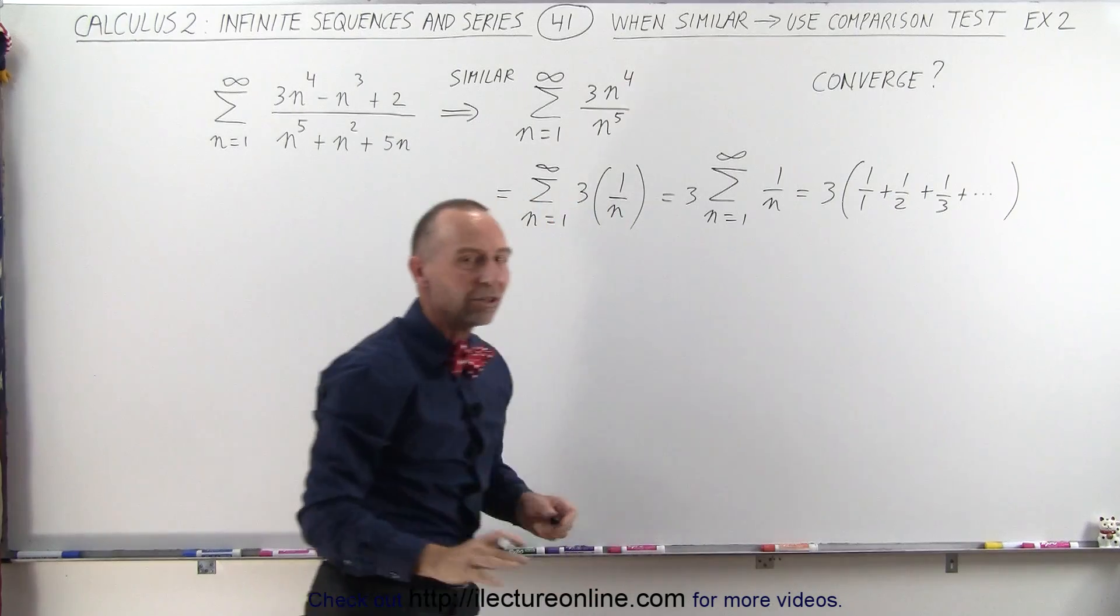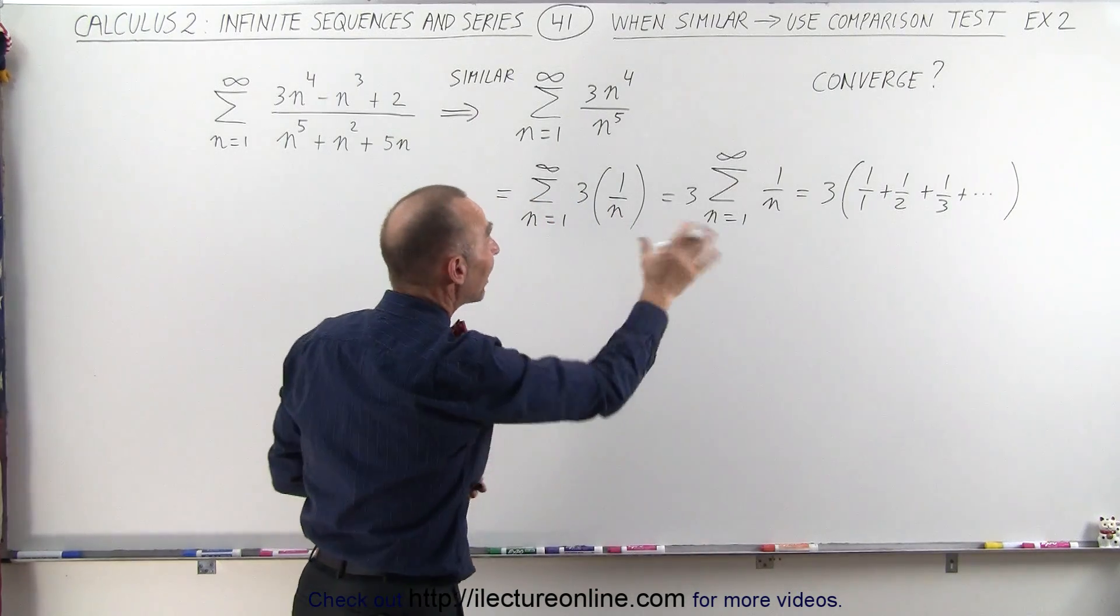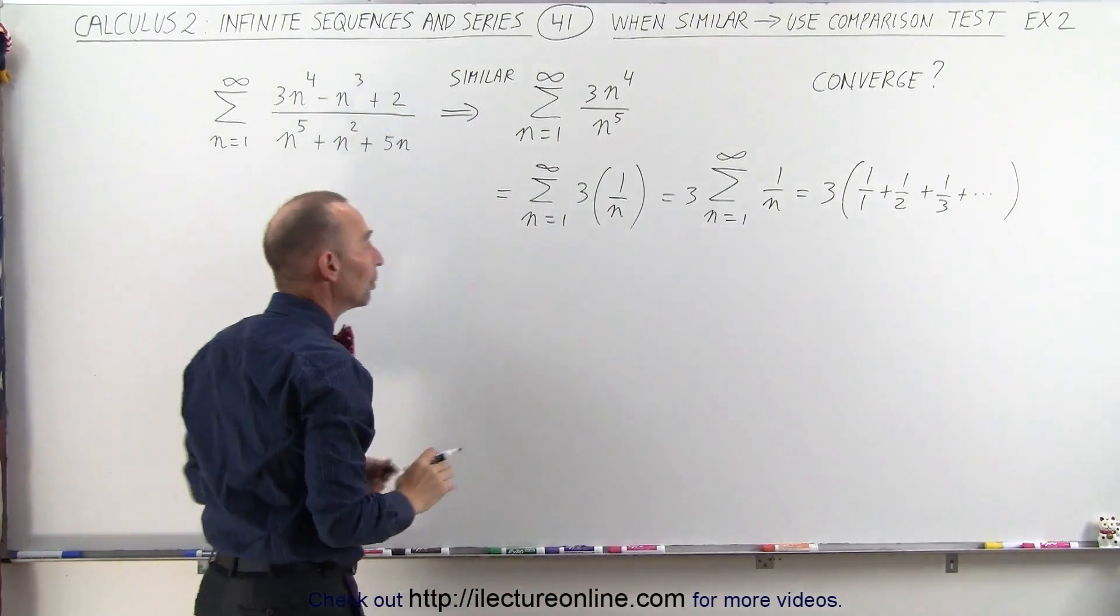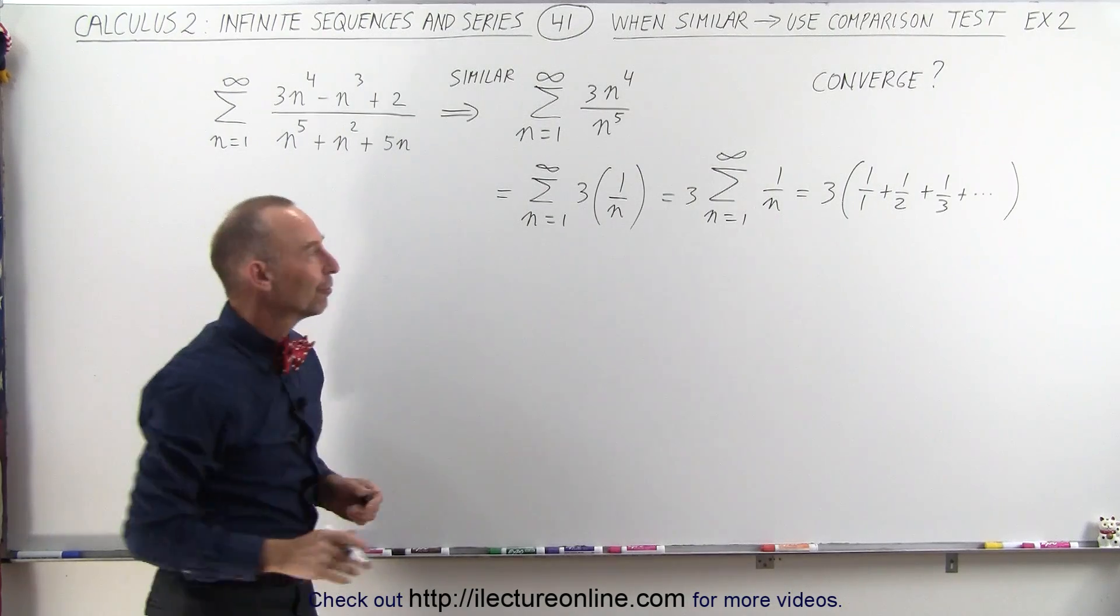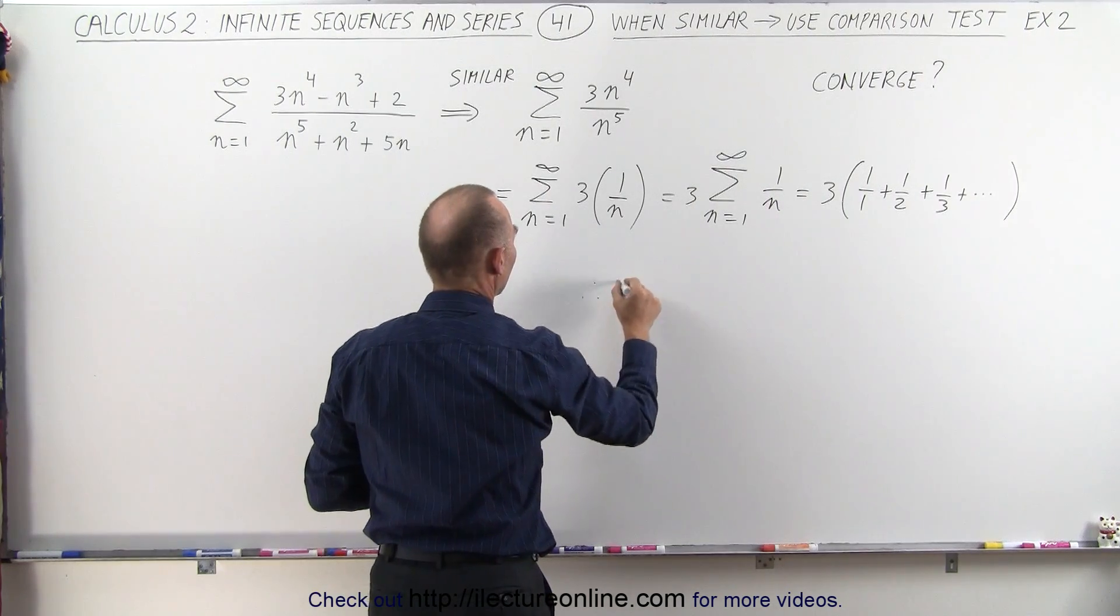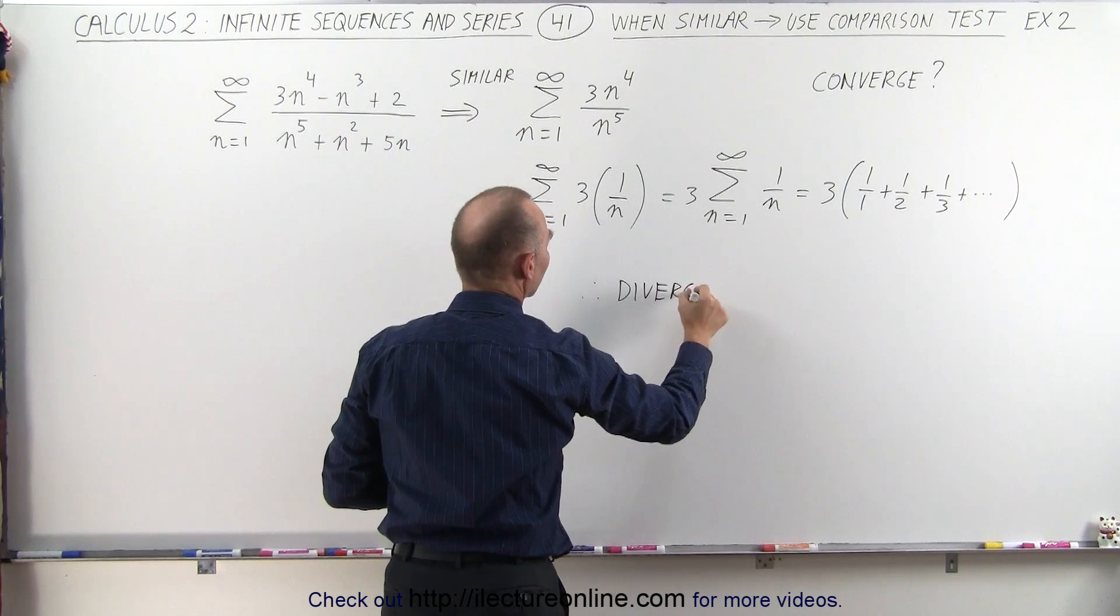And we know that that series does not converge. So if that doesn't converge, and those small terms at the end will not make any difference, it will not converge anyway. Therefore, we can say that this series will diverge.